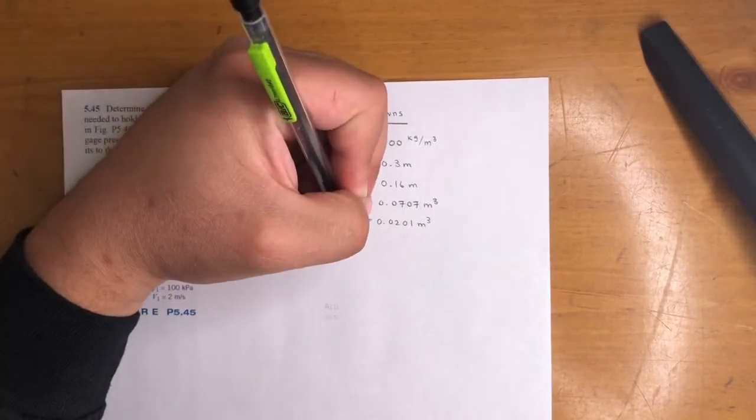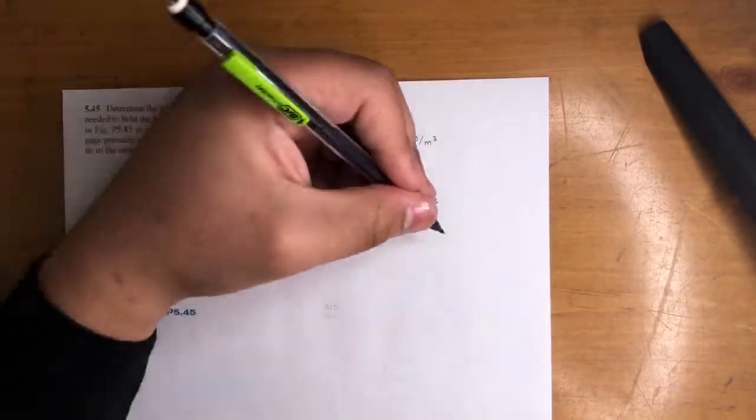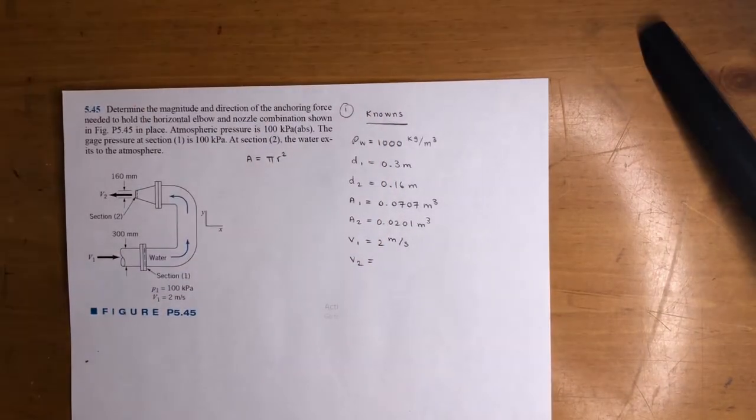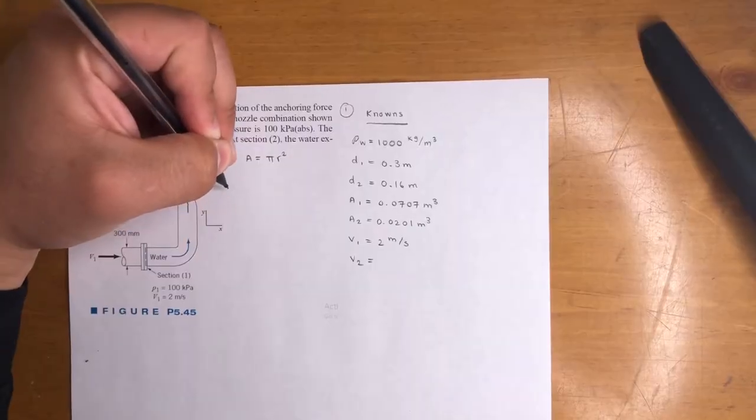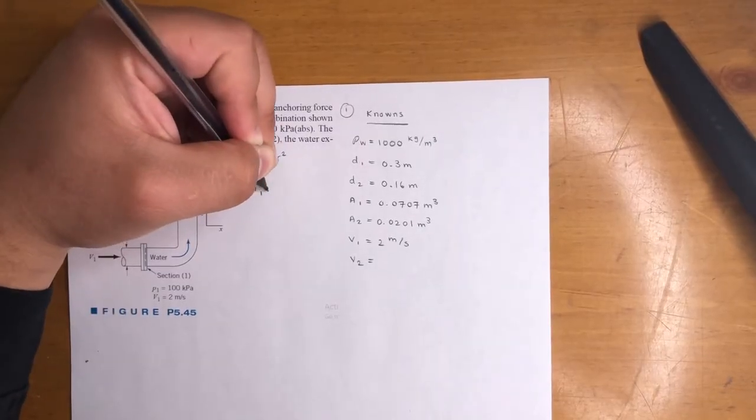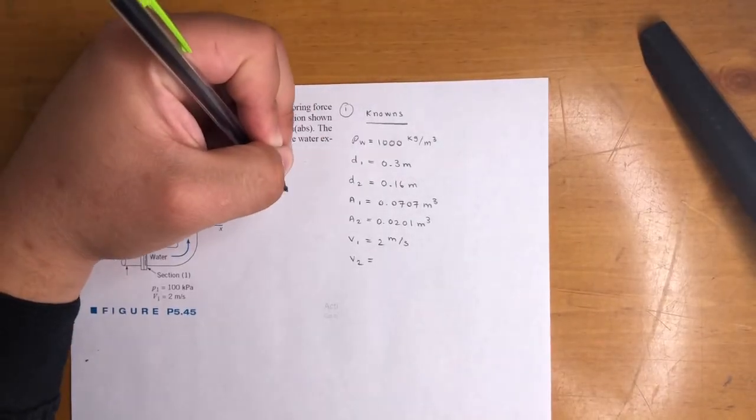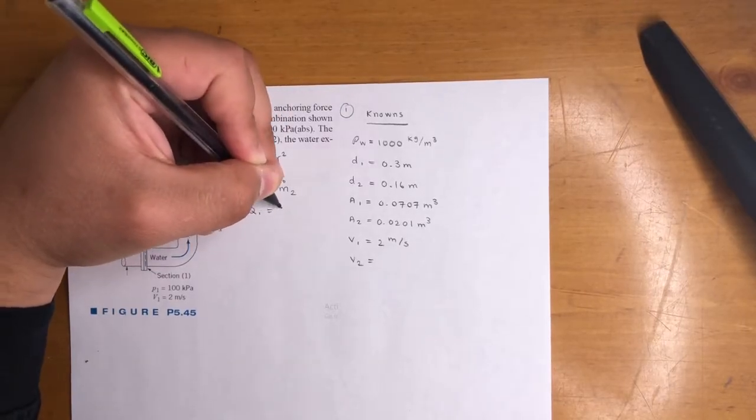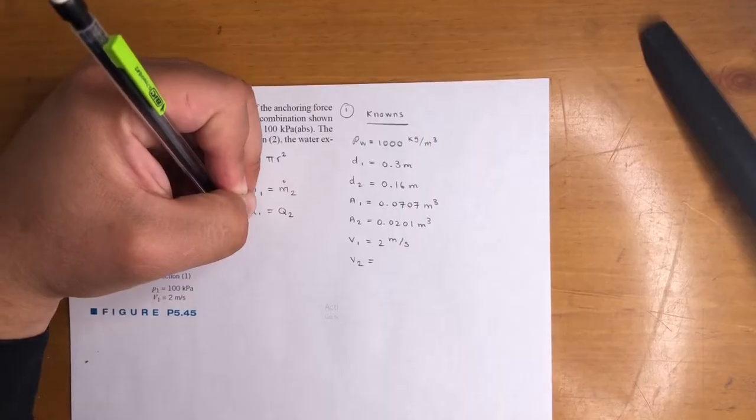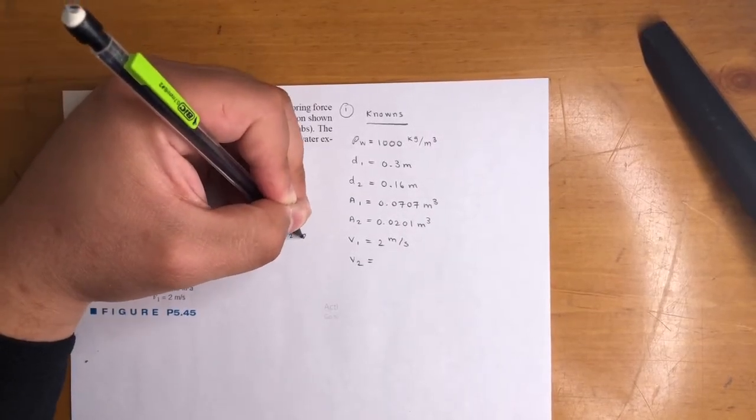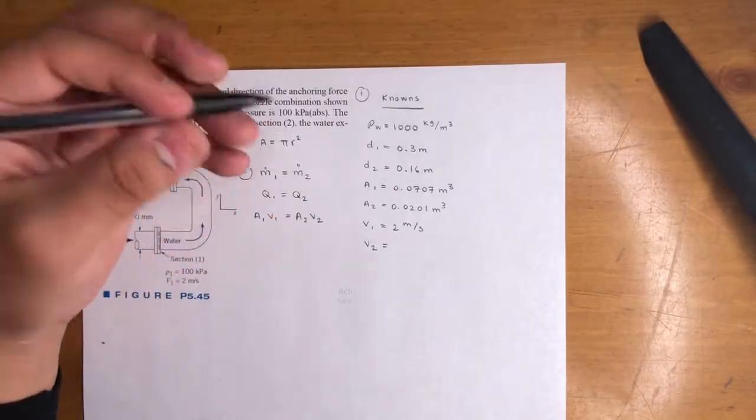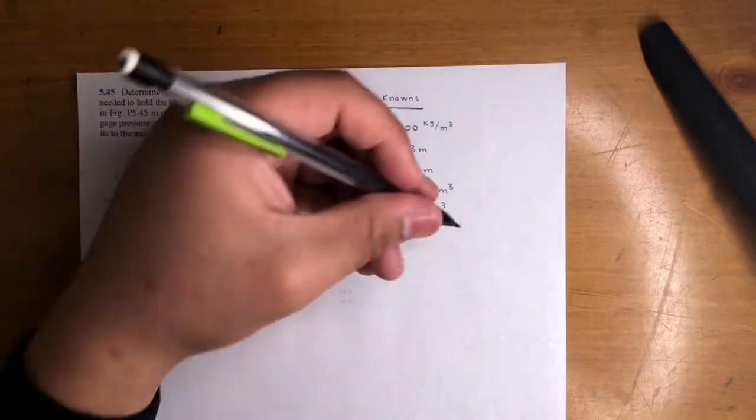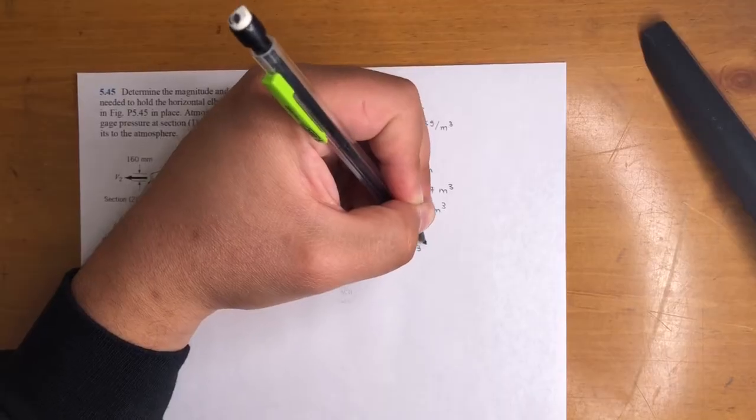What else do we got? We got velocities. Velocity 1, they gave it to us, 2 meters per second. Velocity 2, this is mass conservation. So let's label this step 2. Mass flow rate at the inlet is equal to the mass flow rate at the outlet. Density is constant, so q1 equals q2. That means A1V1 equals A2V2. We have everything except V2. If you plug in your numbers A1, A2, V1, you will get 7.03 meters per second.